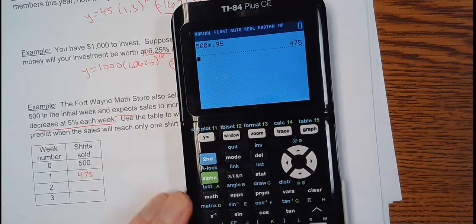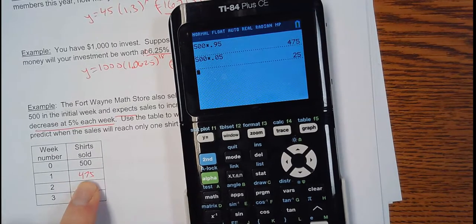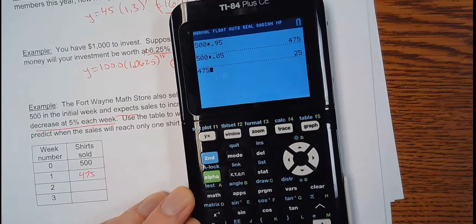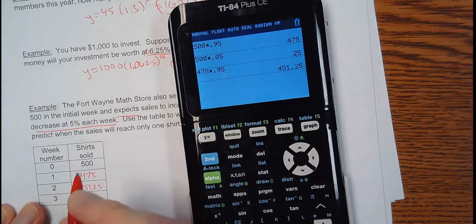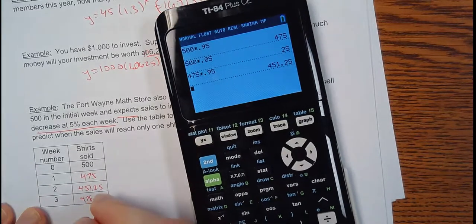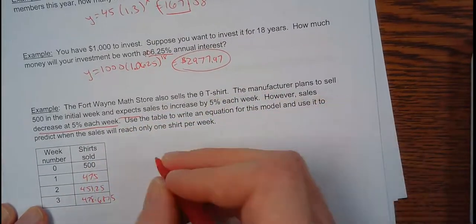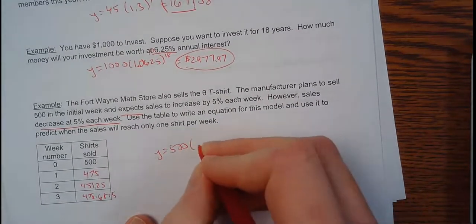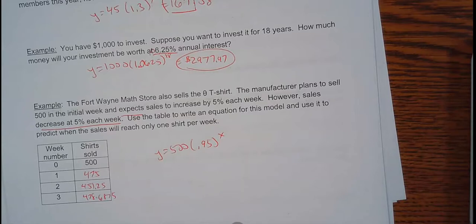If I just took it times 0.05, it would be a terribly small number. I'd have 25 the next week. That's not a 5% decrease. That's a 95% decrease. So, 475 times 0.95, 451.25. Do it again, 428.68. I'm just speeding things up a little bit here. I didn't put that in my calculator. But, now, use a table to write an equation. My initial value is 500. What's the thing I multiplied in my calculator every time? 0.95. Then, x would be the week for whichever week it is.